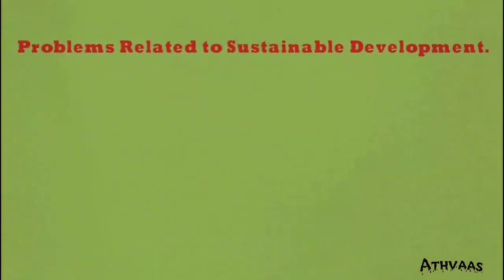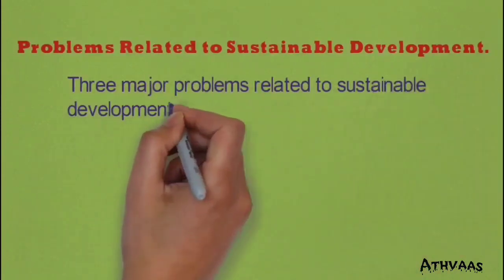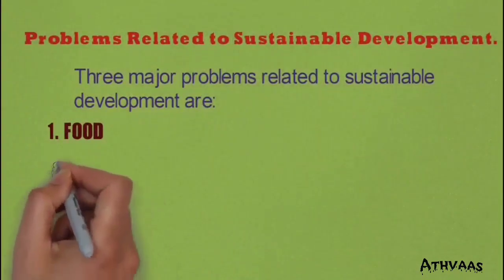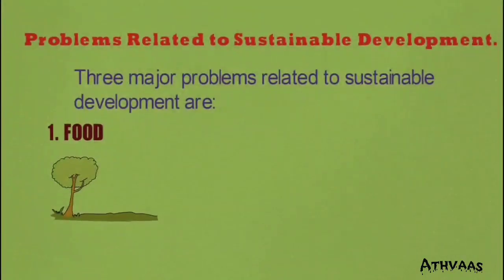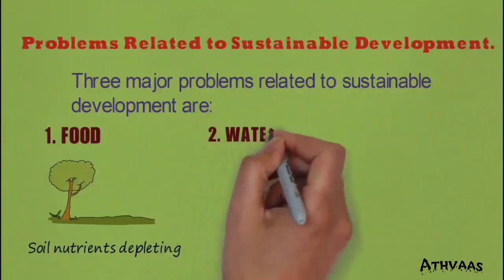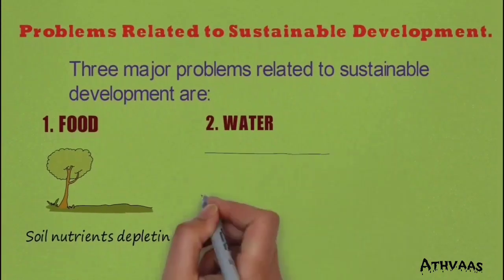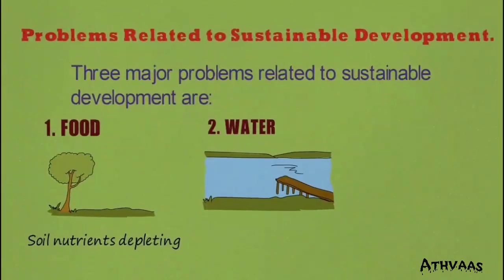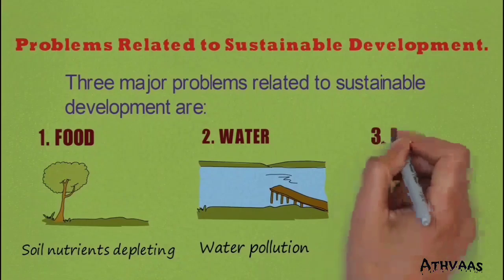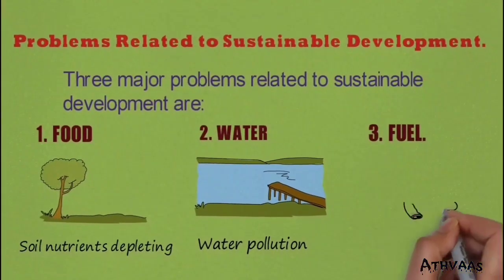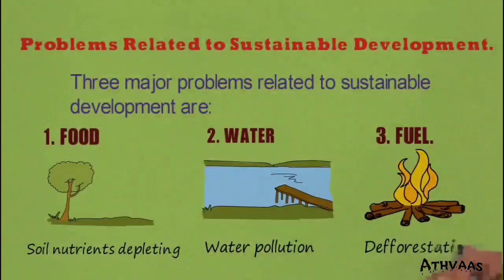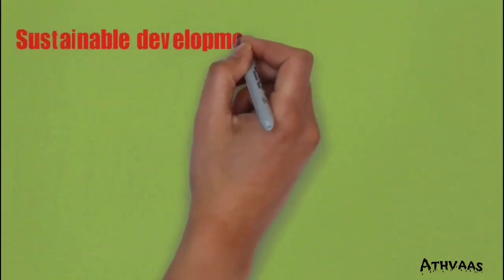There are many obstacles in the way of sustainable development. Three major problems are: first, food — the food we eat comes from plants and soil which have become nutrient-deficient and less fertile. Second, water — our water bodies are getting polluted and need proper care. Third, fuel — we use fuel for cooking, transportation, and other purposes, but we are cutting down our natural resources.